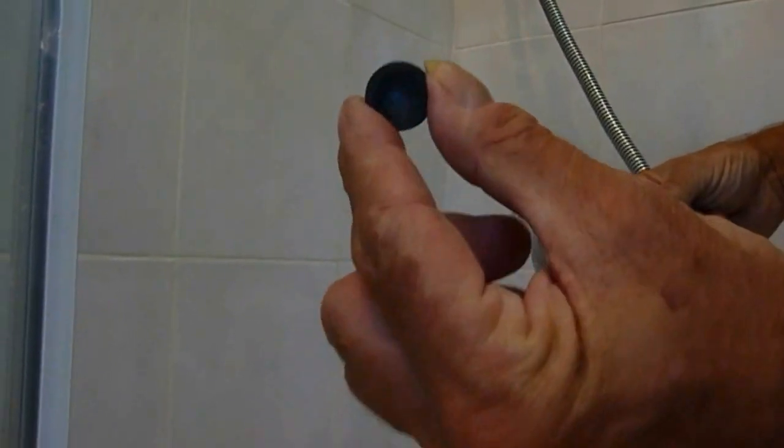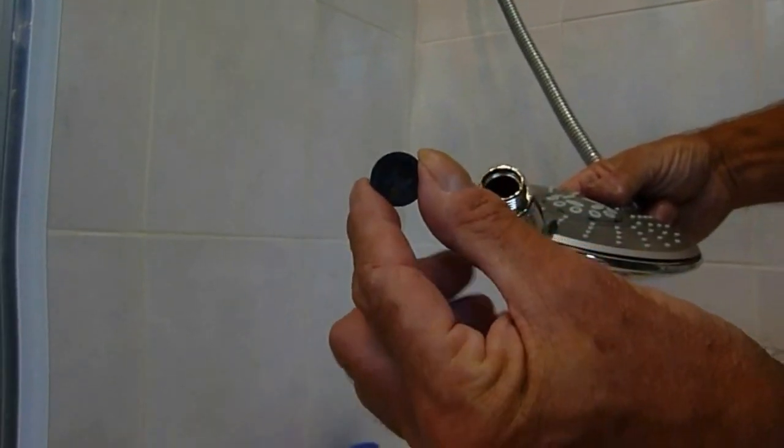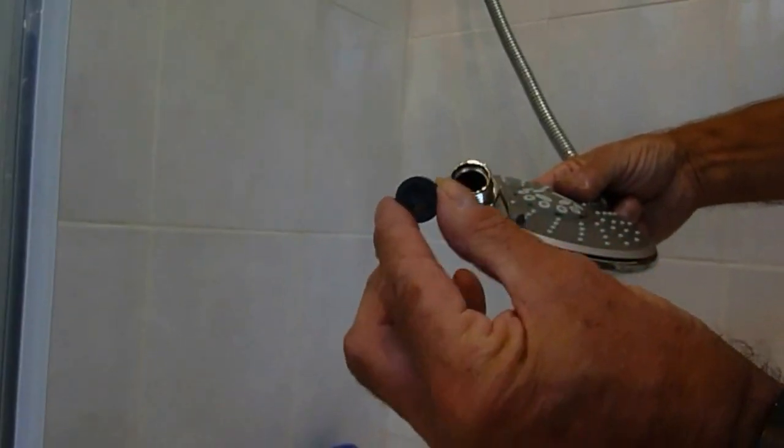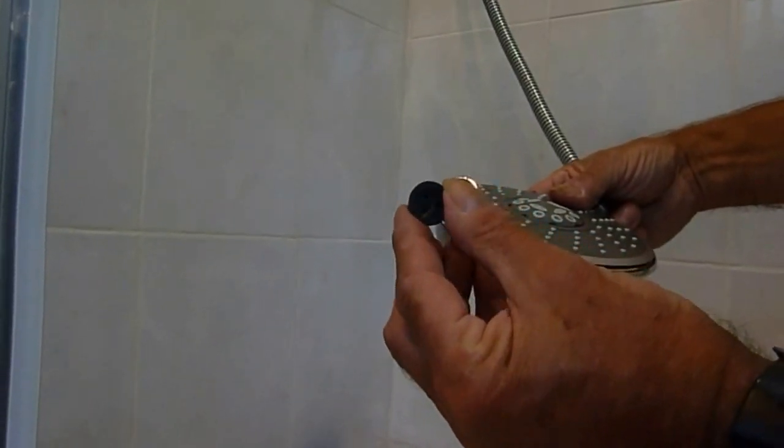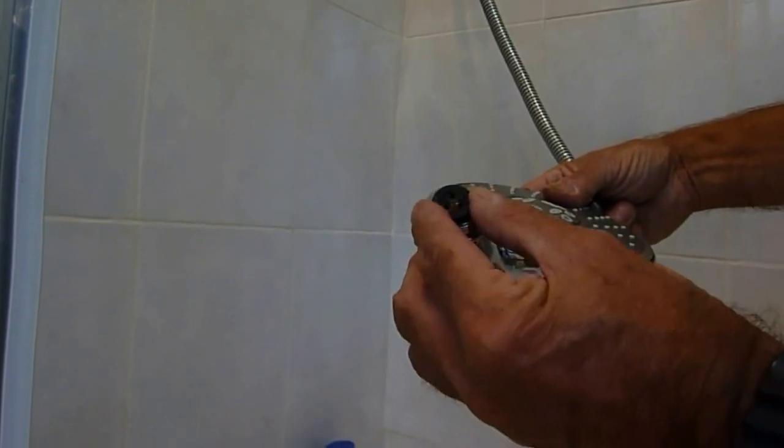Now, if you notice, this one is a special pressure reducing one, sort of for mains power, really, to give the pressure a bit of a boost. This is a power shower. I prefer it with it in. It gives it a little bit more boost.